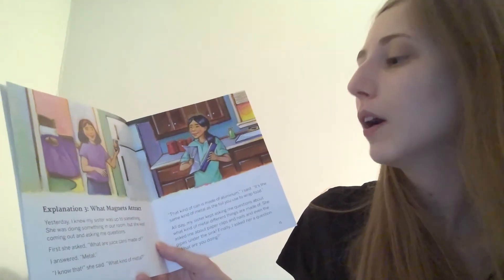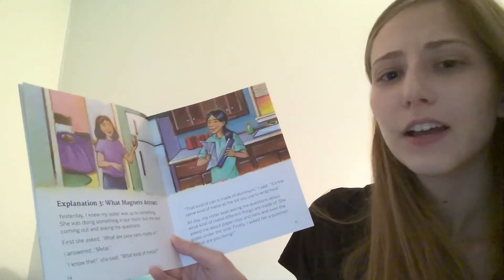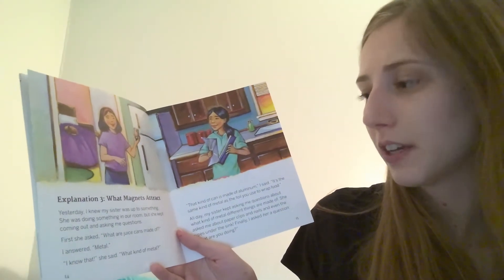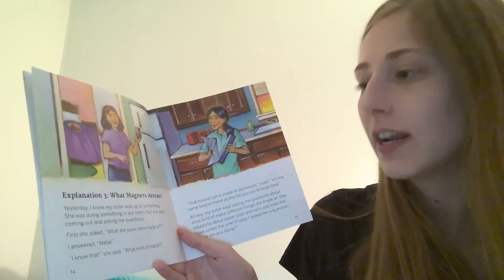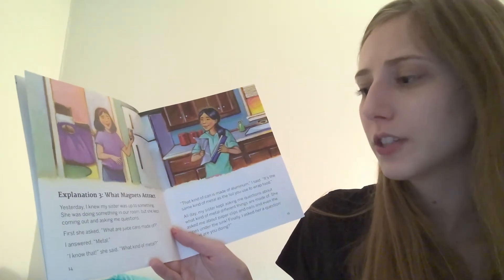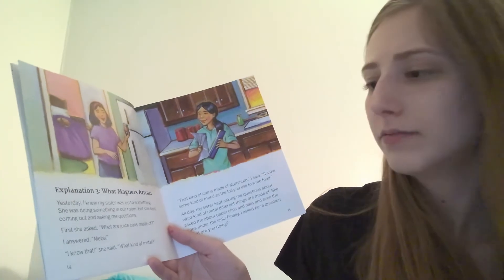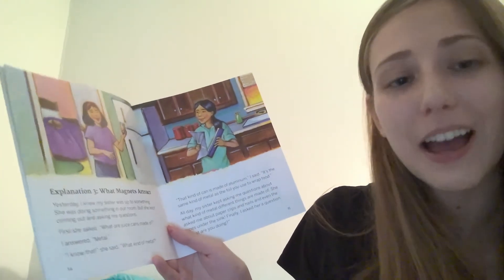Explanation three. What magnets attract? Yesterday, I knew my sister was up to something. She was doing something in our room, but she kept coming out and asking me questions. First, she said, What are juice cans made of? I answered, Metal. I know that, she said. What kind of metal?